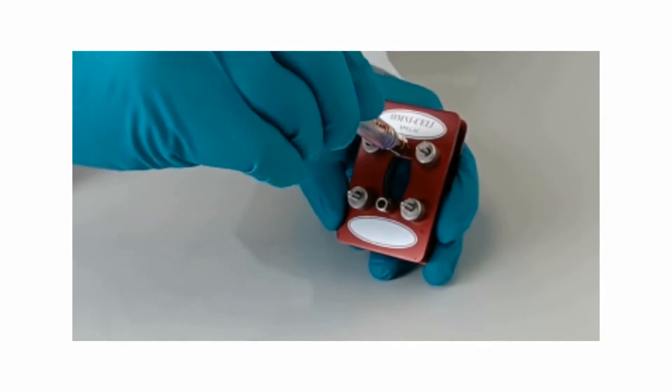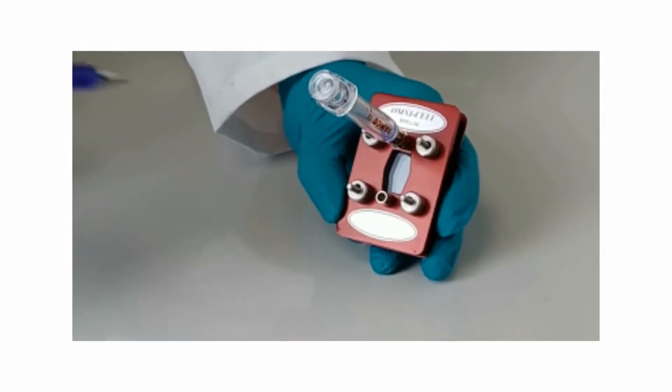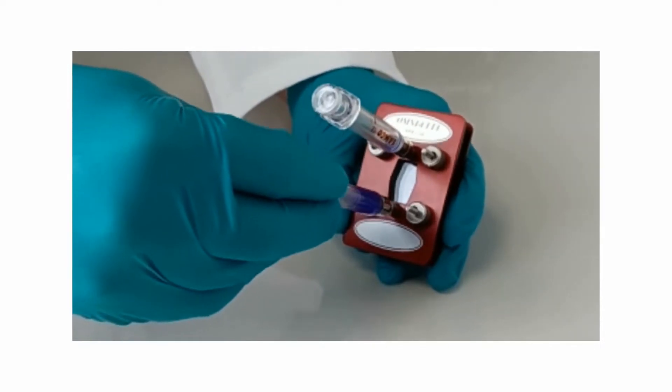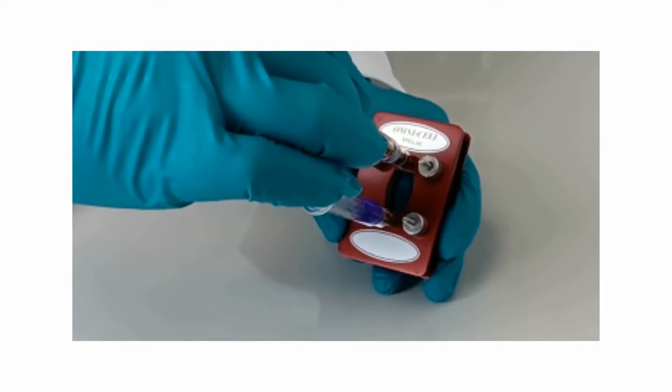Tilt the assembled cell slightly, then attach an empty syringe to the top port. Attach a filled syringe to the bottom port, then pull the sample through the cell with suction by drawing on the empty syringe.